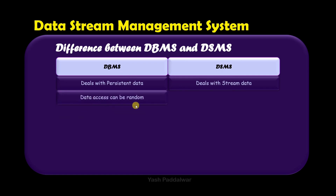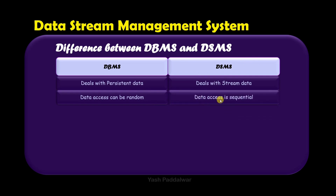In DBMS, data access can be random — we can access any of the records in a random fashion, which may not be sequential. But in DSMS we have to access the data in sequential order. Random access is possible but very expensive, hence generally data access is sequential in DSMS.